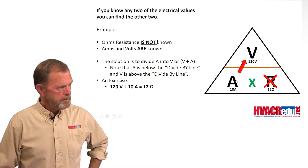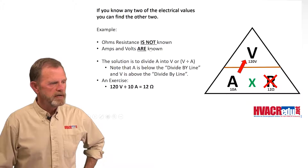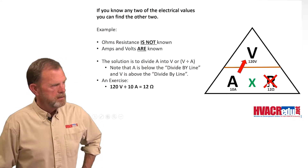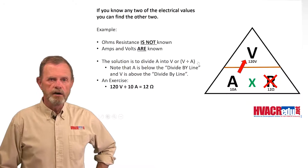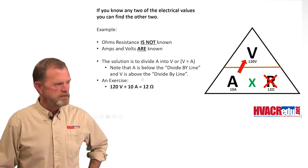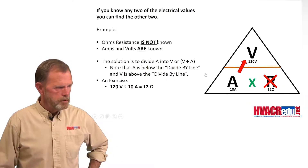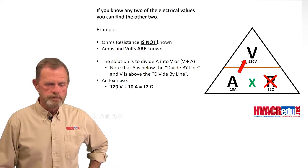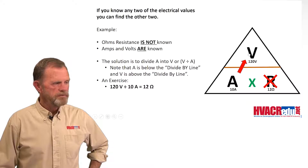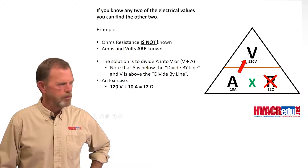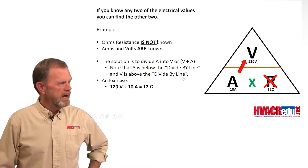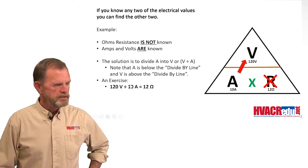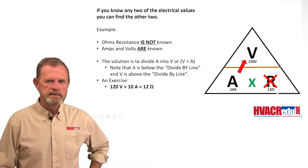Ohms resistance is not known — that's why the R is X'd out with the red X. Amps and volts are known. The solution is to divide amps. Down here it's 10 amps into volts — 120 volts — and that will give you the resistance in ohms. 120 volts divided by 10 amps gives you 12 ohms resistance.